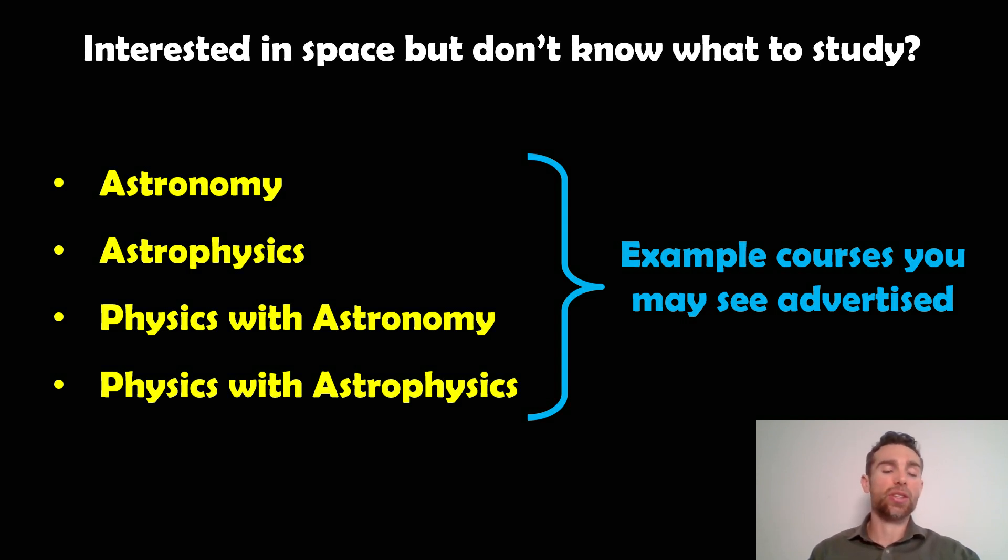Now, if you are looking to maybe study at university, you may see courses kind of like this. I'm talking from the UK perspective. We have courses here like astronomy, astrophysics, physics with astronomy, and physics with astrophysics. There's obviously other variations, but that's just a sample of what you might get. You could have physics with planetary science, mostly focused on planets. You might have physics with cosmology. I'm not going to talk about cosmology here because that's kind of a little bit different. I'm more interested in the astrophysics and astronomy.